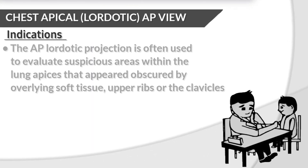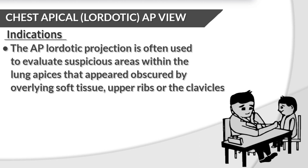Indications. The AP lordotic projection is often used to evaluate suspicious areas within the lung apices that appeared obscured by the overlying soft tissue, upper ribs, or the clavicles.